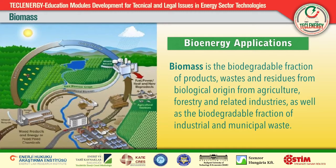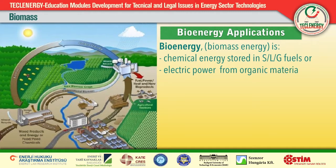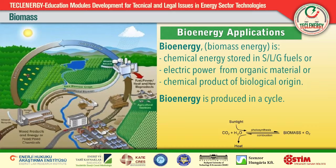Bioenergy can be chemical energy stored in solid, liquid, or gaseous fuels — biofuels — or any electric power derived from organic material or useful chemical products of biological origin. The energy value of vegetable biomass originally comes from solar energy through photosynthesis, during which carbon dioxide is absorbed and transformed into organic material by plants. During conversion processes such as combustion, biomass releases its energy as heat. Essentially, the use of biomass for energy is a reversal of photosynthesis. The utilization of biomass for energetic purposes is environmentally friendly, as during its combustion no additional carbon dioxide is generated.